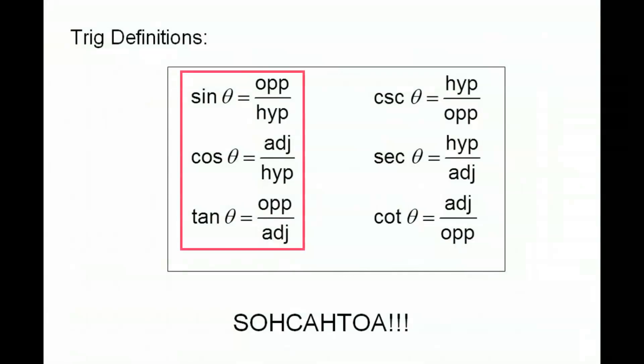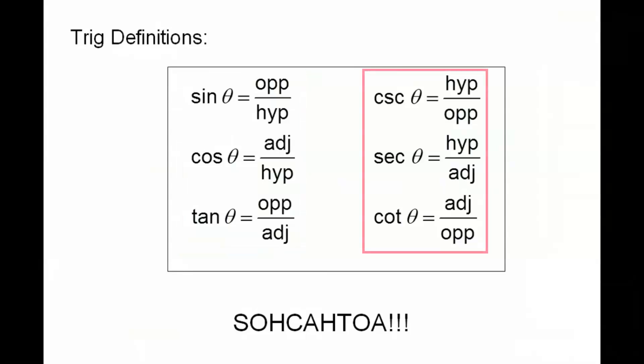I've got sine, cosine, and tangent, and then the reciprocal functions. The reciprocal of sine is cosecant, the reciprocal of cosine is secant, and the reciprocal of tangent is cotangent.